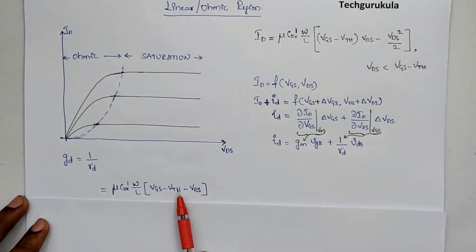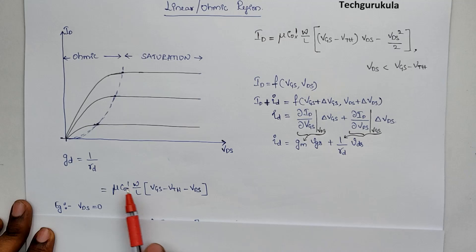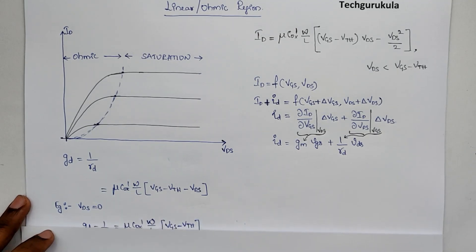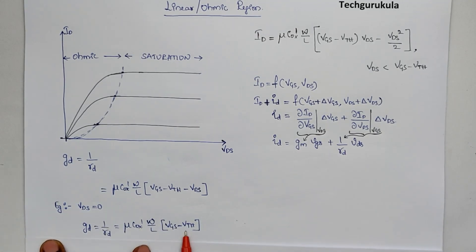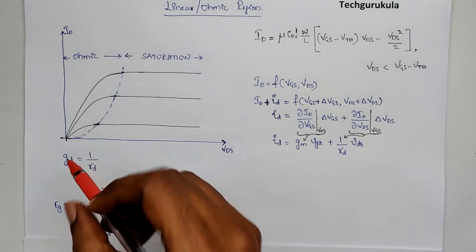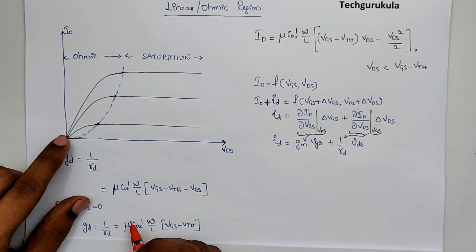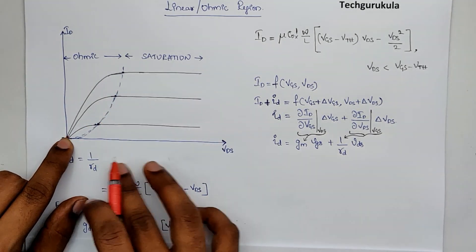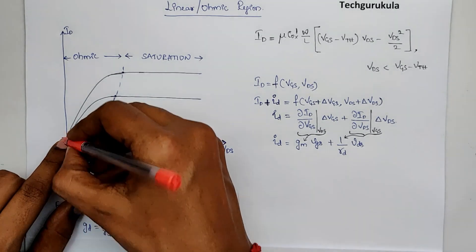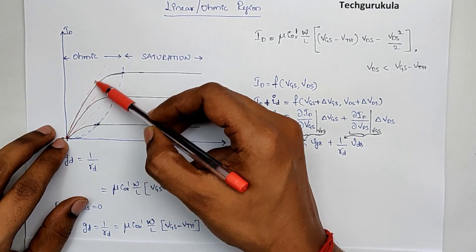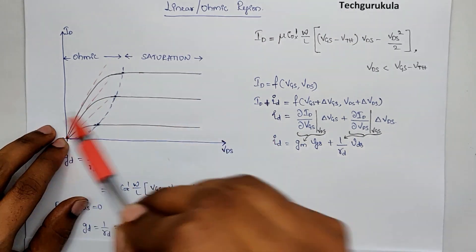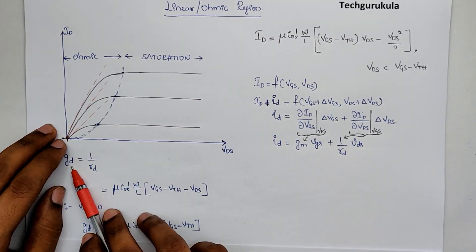To understand this term better, let's take VDS is equal to 0 as an example. In which case, this equation GD would be equal to this value. Now, to understand this, at VDS equal to 0, which means we get to this point, if we take this slope of ID versus VDS characteristics in this, we would get lines like this, which are like the slopes at VDS equal to 0 for GD.